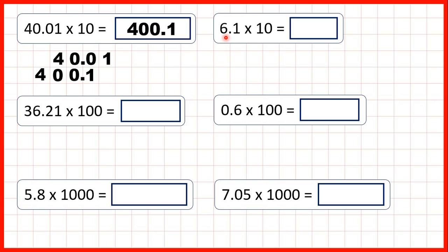Now we have 6.1, so we write the number out and copy down the decimal point. To multiply by 10, the digits move 1 square to the left. That makes sense because when we have 10 of something, we can exchange it for 1 of the place value to the left. So to multiply by 10, we move the digits 1 square to the left, giving us 61 and then a decimal point.